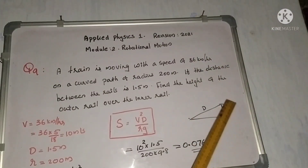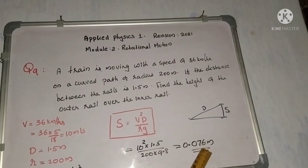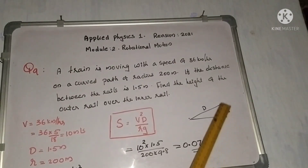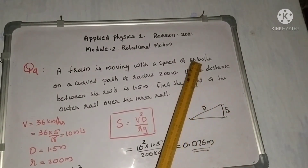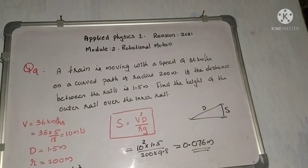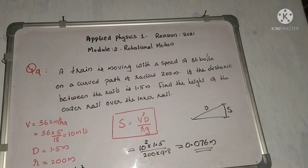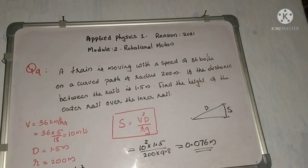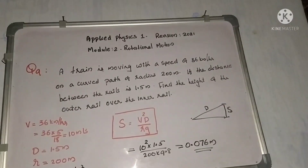The height of the outer rail over the inner rail is 0.076 m or 7.6 cm for a train at 36 km per hour. We have discussed these problems. Thank you.